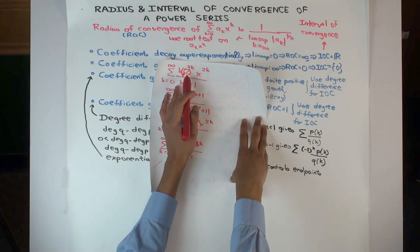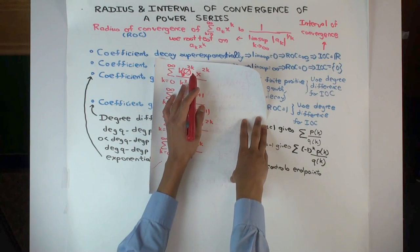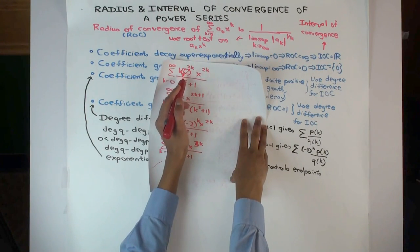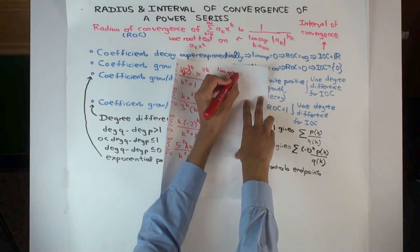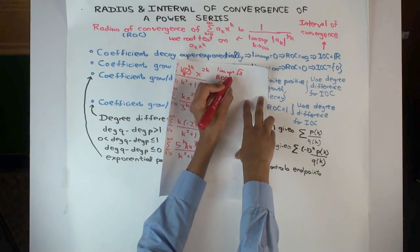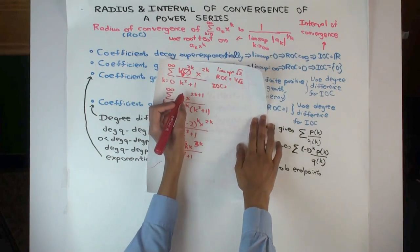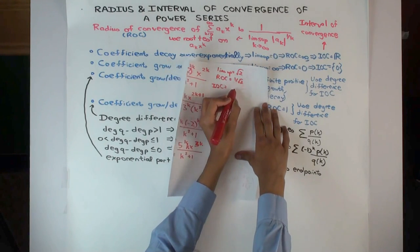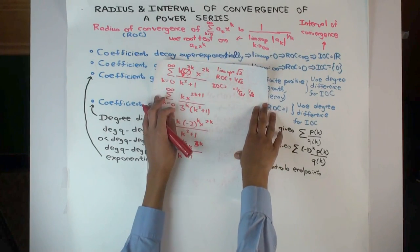If you directly try to take the limit, it doesn't make sense because some terms don't have coefficients — the odd powers of x don't have coefficients. So the limit wouldn't exist if you tried to do this directly. But the limsup would, and it would be √2. So the radius of convergence is 1/√2. Now for the interval of convergence, you have to figure out the endpoints. The degree difference of the polynomial part is 1.